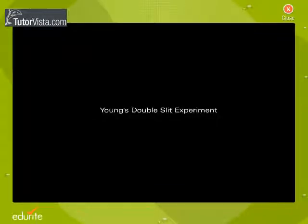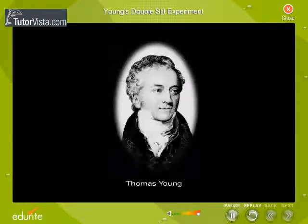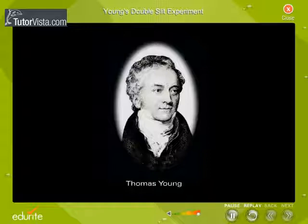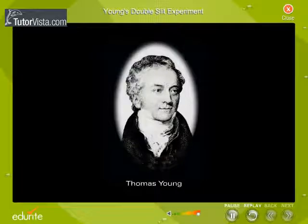Young's Double Slit Experiment. Interference in light waves from two sources was first demonstrated by Thomas Young in 1801.